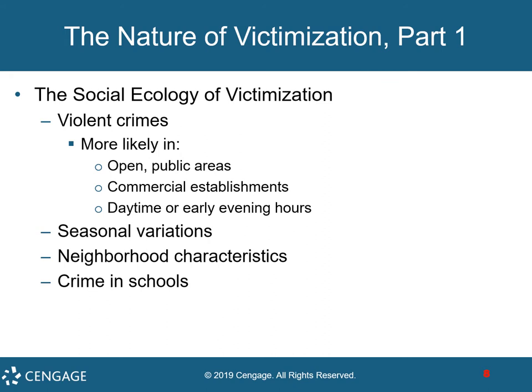There is also a social ecology of victimization. Victim surveys suggest that violent crime is slightly more likely to happen in open public areas during daytime or early evening hours. Rape and aggravated assault usually occur after 6 p.m. Two-thirds of rapes occur between 6 p.m. and 6 a.m. There is a seasonal variation — household property crimes and serious violent victimization have higher rates in the summer, but when all violent crimes are counted, fall has the highest rate of violence. Central parts of the city have higher rates of crime than suburban areas.